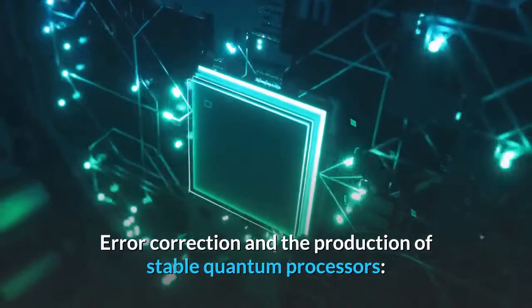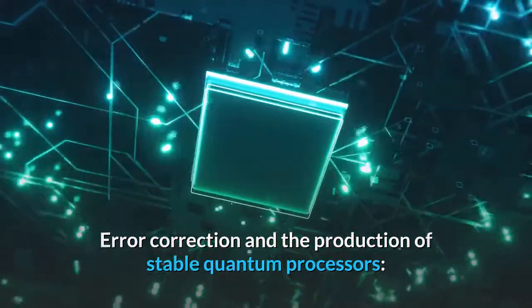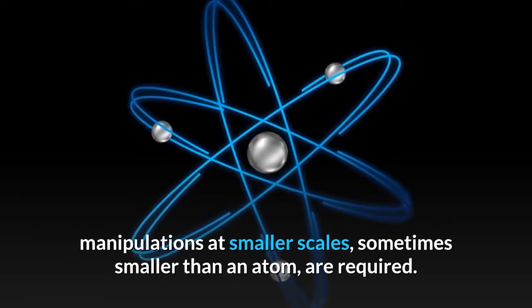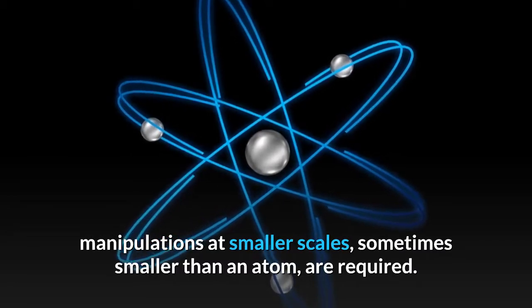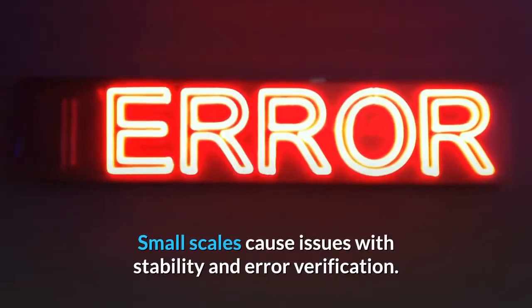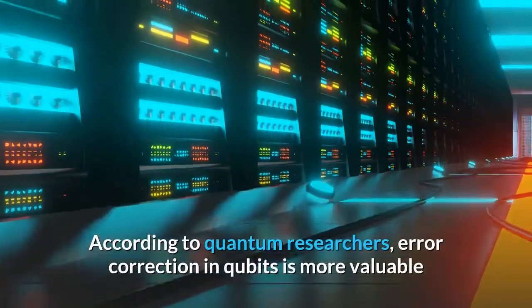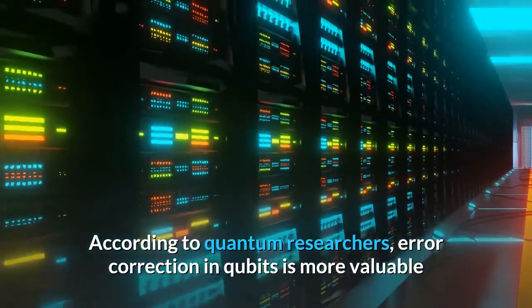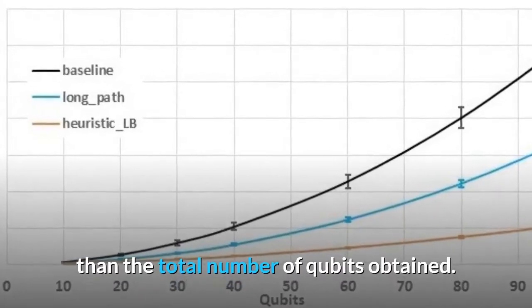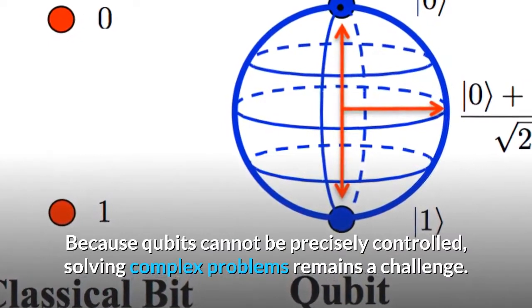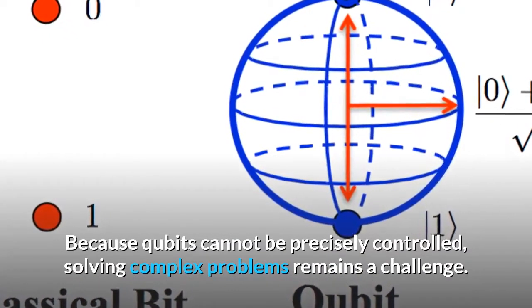Error correction and the production of stable quantum processors. To take advantage of quantum mechanics properties, manipulations at smaller scales, sometimes smaller than an atom, are required. Small scales cause issues with stability and error verification. According to quantum researchers, error correction in qubits is more valuable than the total number of qubits obtained. Because qubits cannot be precisely controlled, solving complex problems remains a challenge.